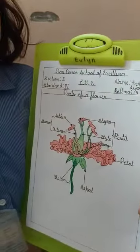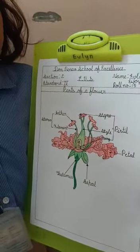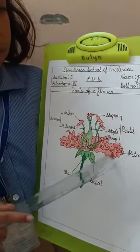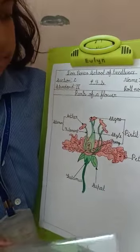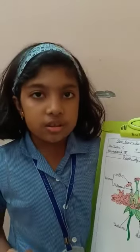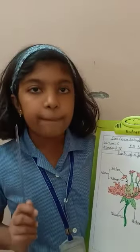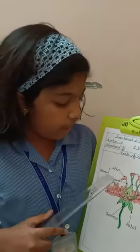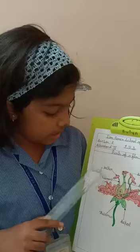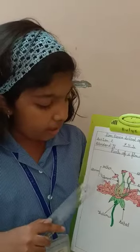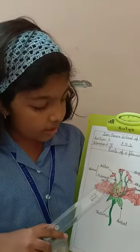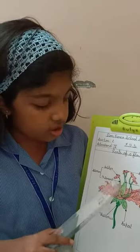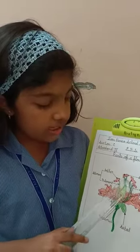The most colorful and attractive part of the flower is called the petal. In a flower there are male and female parts. The male part is the stamen, which is the rod-like structure we see.